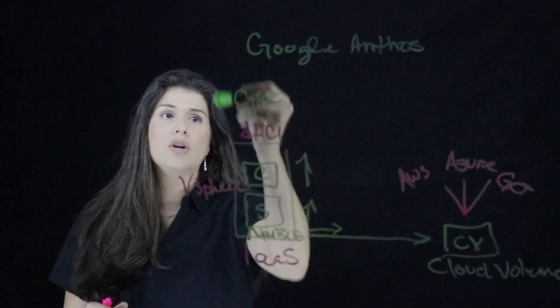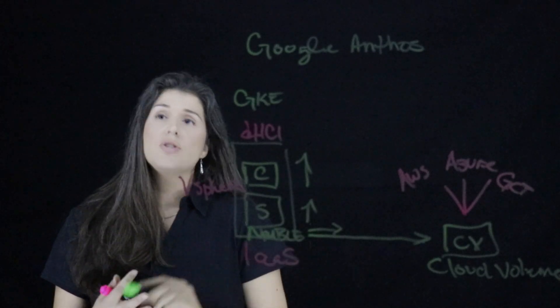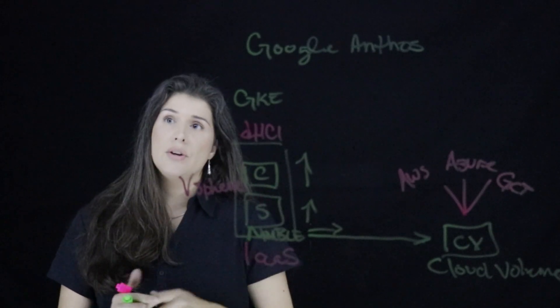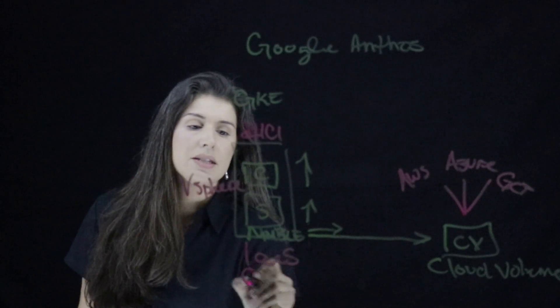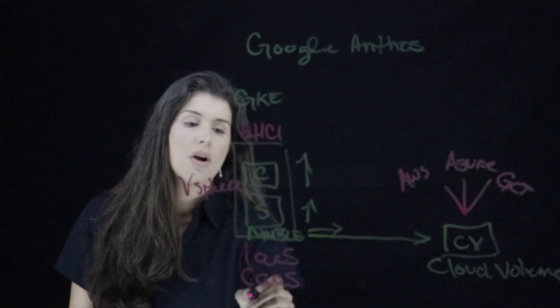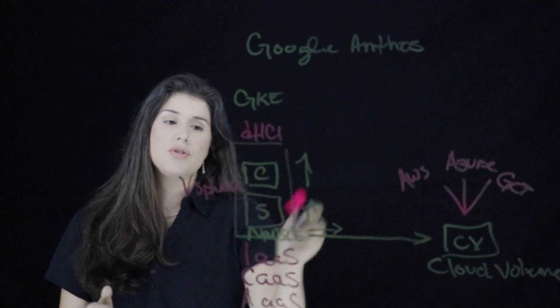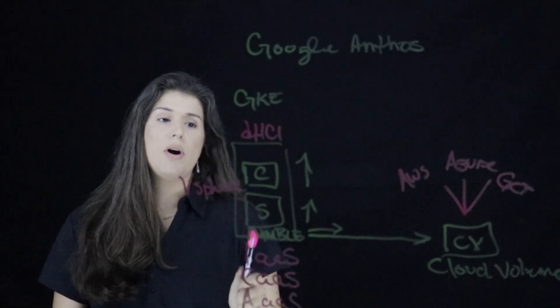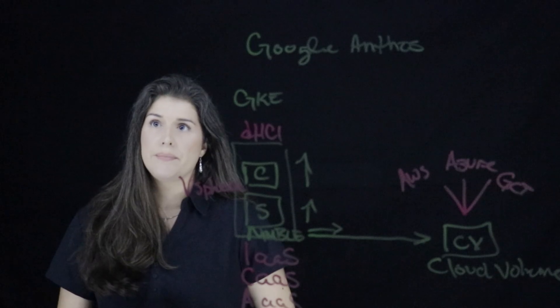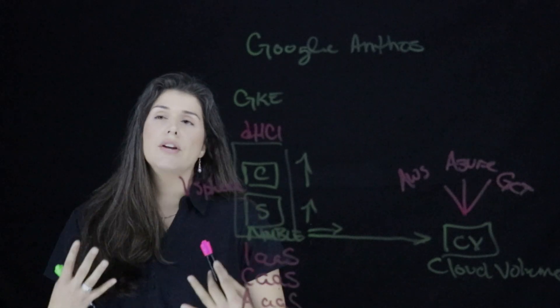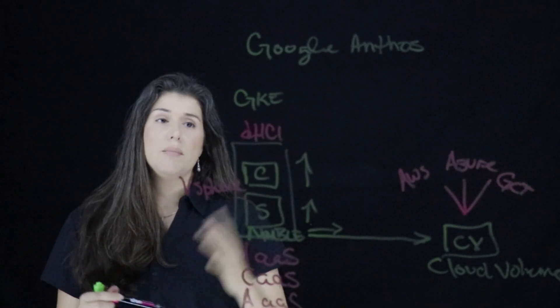Now, if we combine Google Kubernetes Engine on-premises with our DHCI solution, that's our validated design for Google Anthos on-premises with DHCI. We now have the ability to have containers as a service or applications as a service as part of our solution. And here's the best part. We can still run our traditional applications on DHCI. So now we've unlocked a myriad of workflows. We're still looking at just the on-premises side here. But let's talk about this.